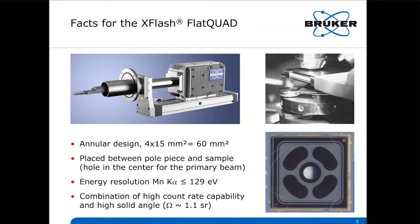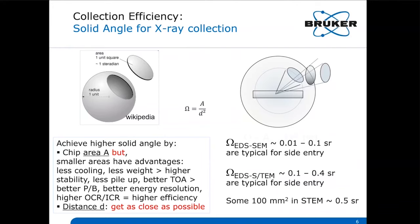The Flat Quad is inserted between the pole piece and sample, as you can see on the top right, with a hole in the center for the primary beam. The four SDD segments each have an area of 50 mm², giving a total of 200 mm² surrounding the hole through which the electron beam passes. Through the combination of the four channels with a maximum of 600,000 counts per second for each channel, the Flat Quad can handle up to 2,400,000 counts per second with a standard energy resolution of 129 eV for Mn Kα.